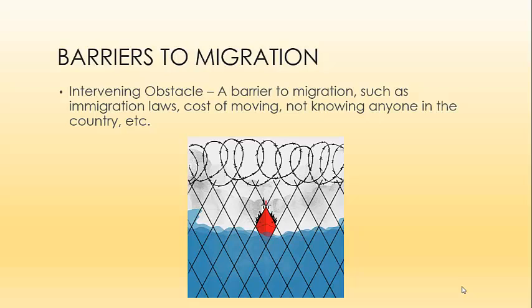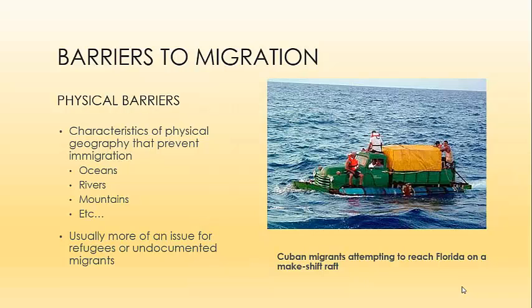Migration is not always easy — there are many barriers to migration. One definition we want to establish is that there can be intervening obstacles — these are barriers to migration such as immigration laws, the cost of moving, or not knowing anyone in the country. These barriers can be either physical or political. Physical barriers are characteristics of physical geography that prevent immigration — things like oceans, rivers, or mountains that separate you from the place you want to go. This is usually more of an issue for refugees or undocumented migrants. For example, Cuban migrants attempting to reach Florida on a makeshift raft made out of a pickup truck, or refugees from the Middle East and North Africa crossing the Mediterranean on rafts — these are people facing physical barriers to their migration.